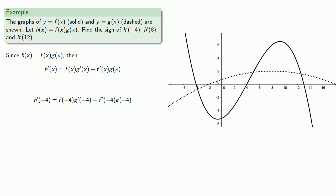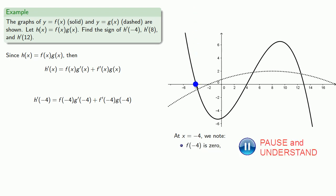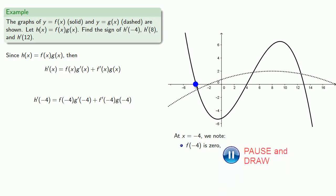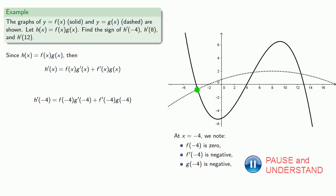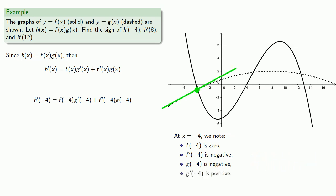Now because our ability to read the graph accurately is limited, we're going to focus on the sign of the values. So at x equals negative 4, f of negative 4 is 0. f prime of negative 4 is the slope of the line tangent to the graph — the tangent line slopes downward, so f prime of negative 4 is negative. g of negative 4 is negative, since the graph of y equals g of x is below the x-axis at this point. If we draw the tangent line to g at negative 4, we see it slopes upward, so g prime of negative 4 is positive.